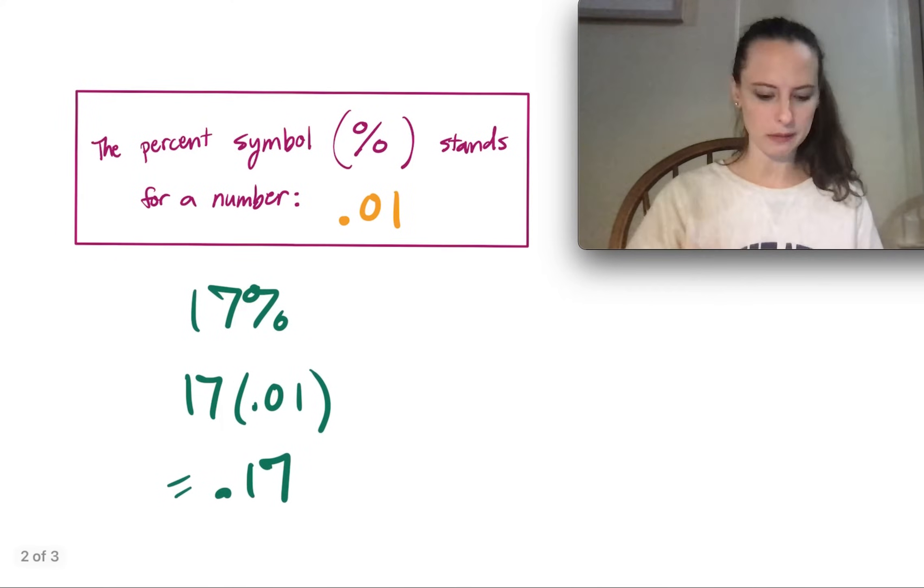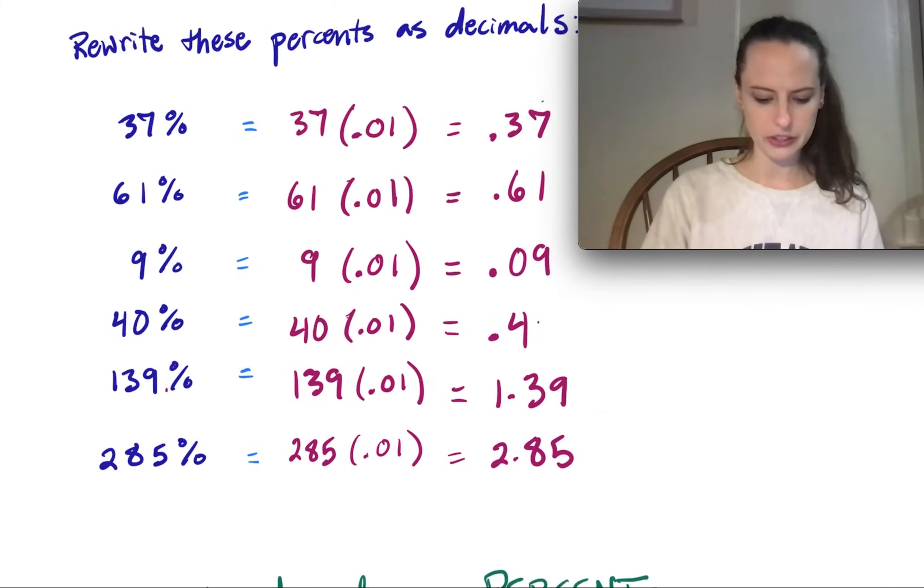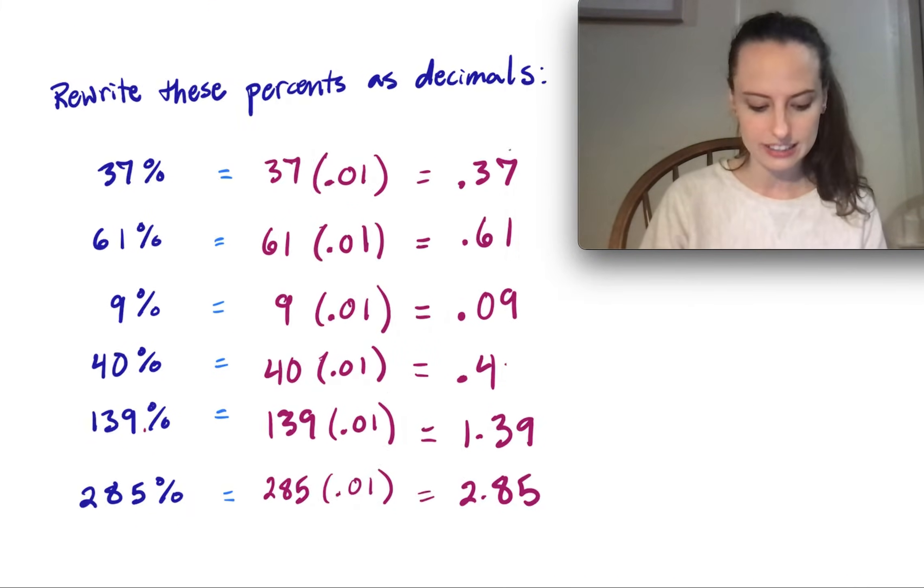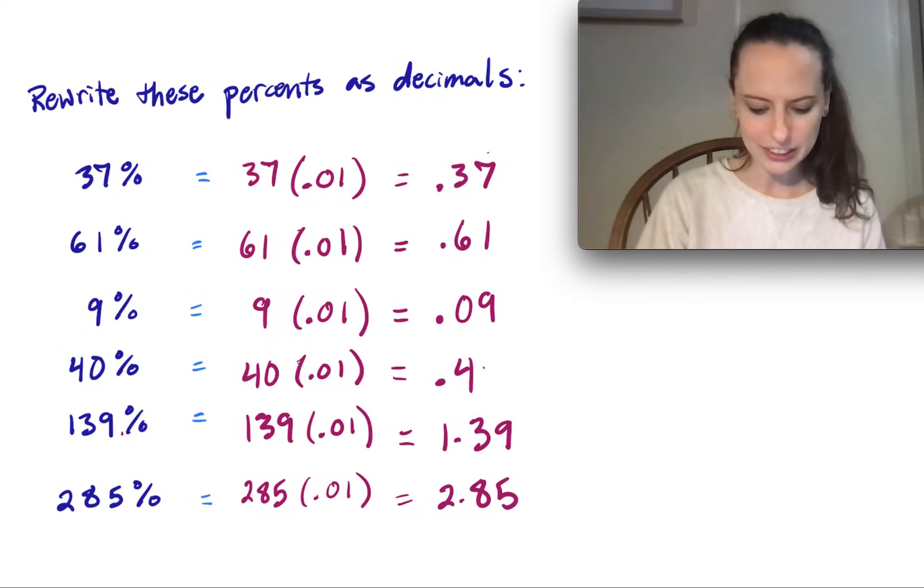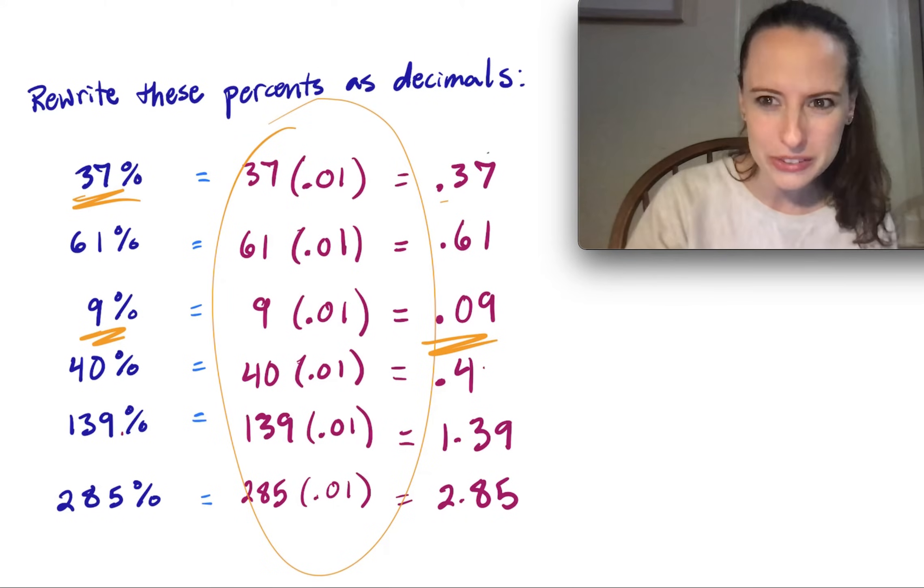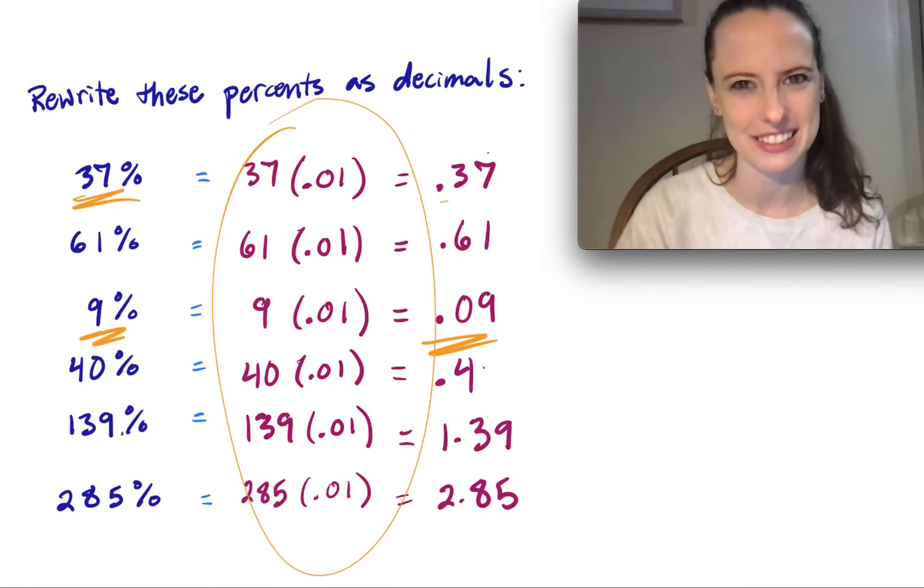So I have a bunch of examples of this here, just so you can see how percents get converted into decimals. All we're doing here is moving the decimal two places over. So 37% becomes .37, 9% becomes .09. So again, moving the two decimal places over, or as you can see here, it's always multiplying by that .01.